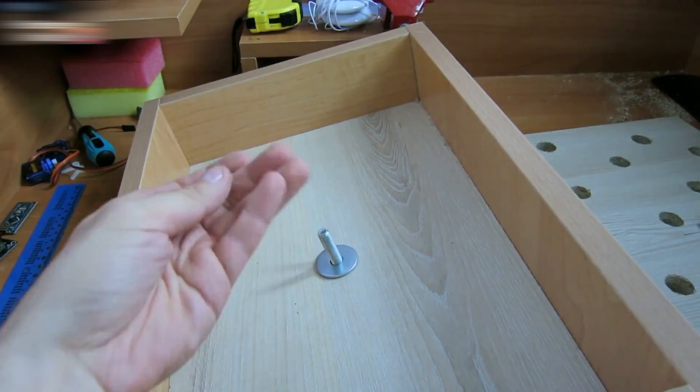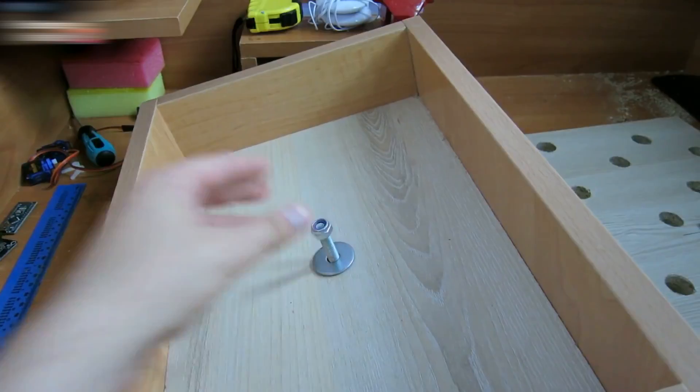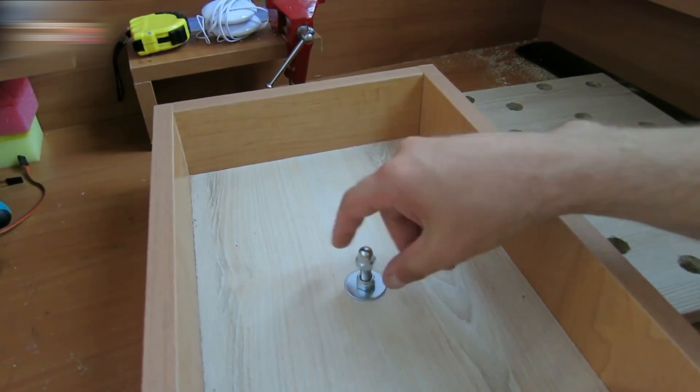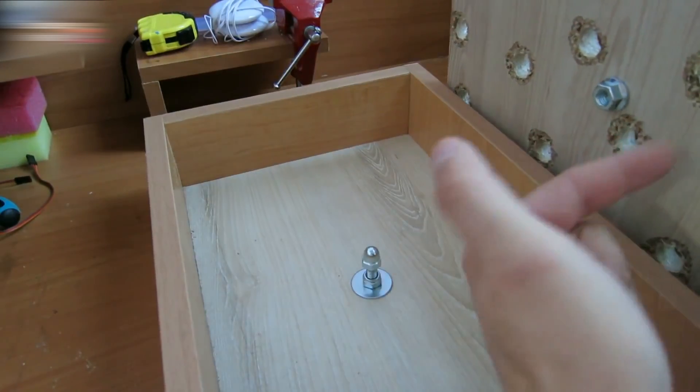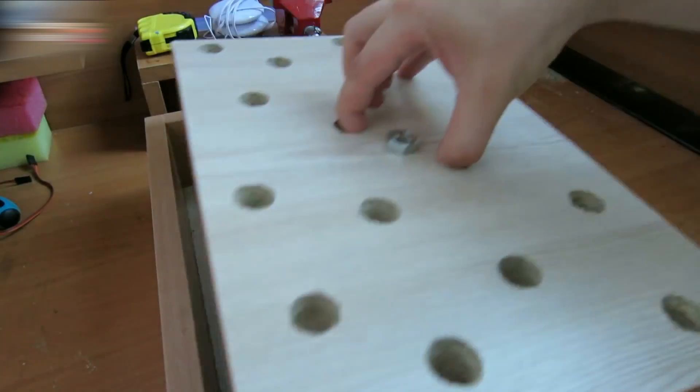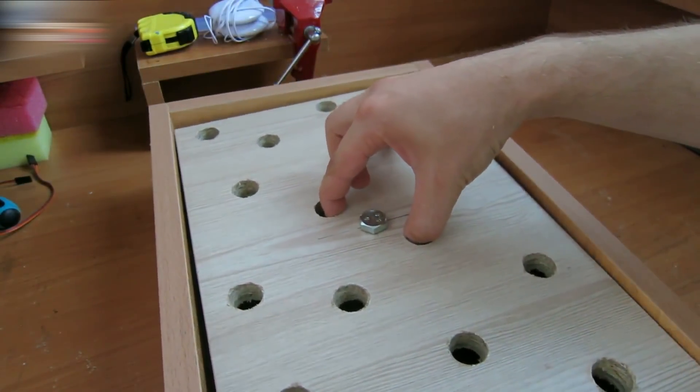Put a washer bolt and a lock nut on the screw, and tighten it all with a nut cap. Try the top part on. The screw and nut dent should fit into the nut cap. And the board should move freely.